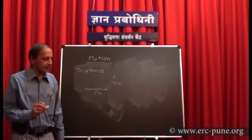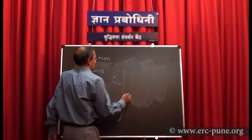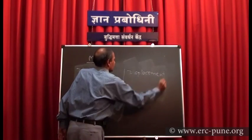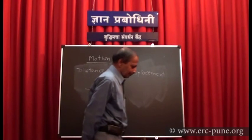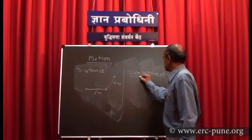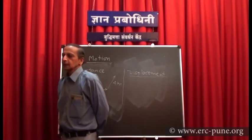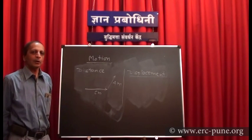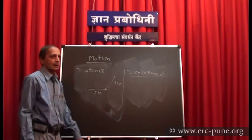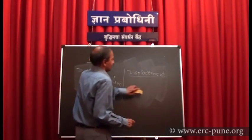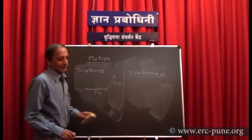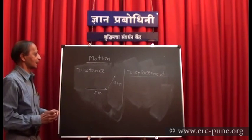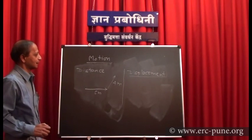Now I want to define one more term: displacement. Displacement is a vector quantity. It is nothing but the shortest distance between the initial position and final position of the body, along with the direction.